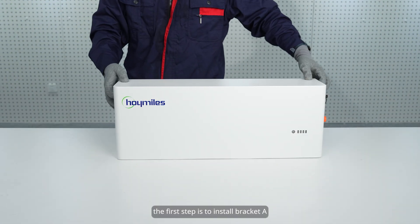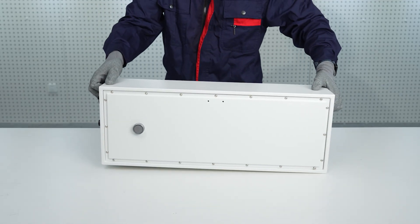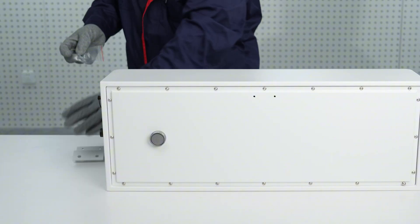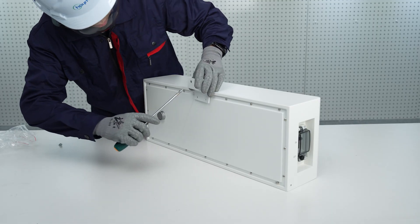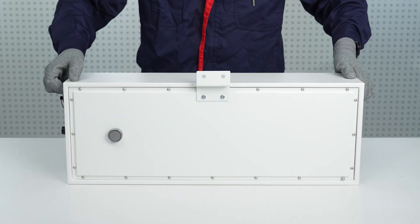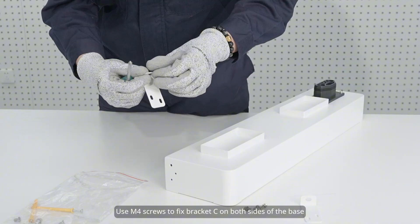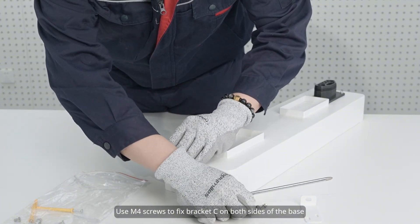The first step is to install bracket A. Fix the bracket A on the top of the control box firstly. Use M4 screws to fix bracket C on both sides of the base.